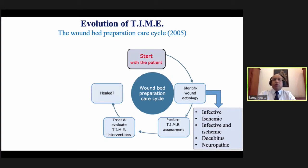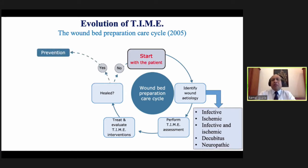Once a patient comes to us in OPD, the most important thing when we look at the wound is to know what type of wound we are dealing with — is it infective, ischemic, infective and ischemic, decubitus, or neuropathic? After that, perform the assessment according to TIME criteria. Once assessment is over, start the intervention. The wound is either healed or not healed.